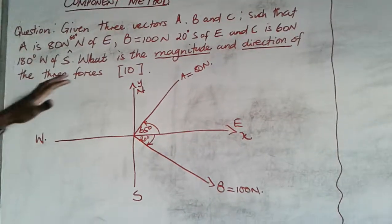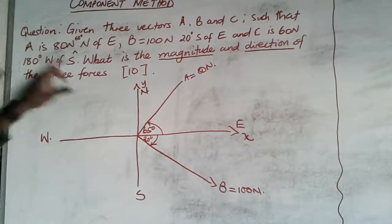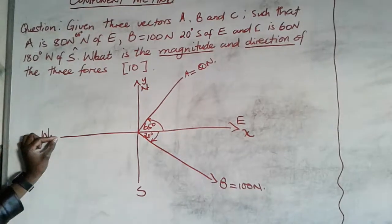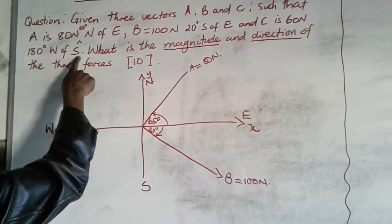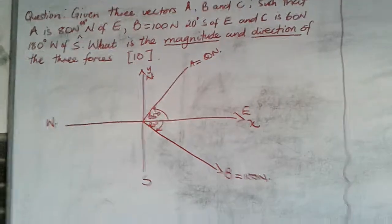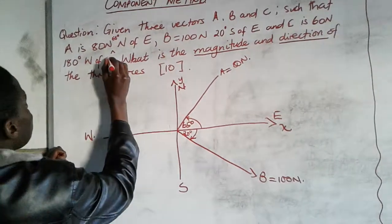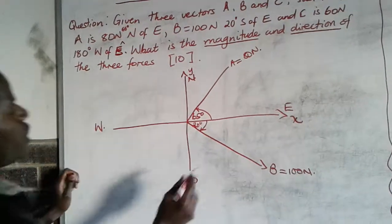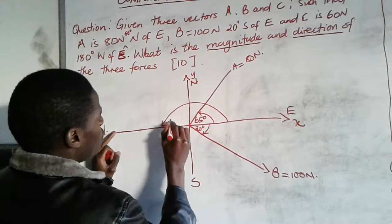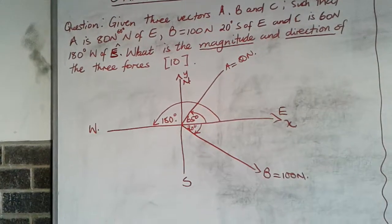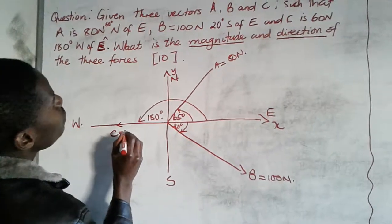We also have vector C, which is 60 newtons. It's actually 180 degrees west of east — not west of south — so going from east to west, which is 180 degrees. We use this horizontal line to represent that angle. Force C is 60 newtons, and all forces are now represented on the cardinal points.